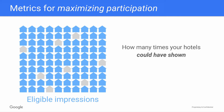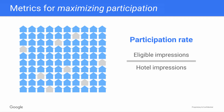Next is eligible impressions — this is the number of times your hotel ads could have shown; in other words, how many impressions you were actually eligible for. This brings us to participation rate, which is the impressions you were eligible for divided by the total opportunity out there for your hotels to show. This metric helps you understand your total opportunity and how much of it you're actually eligible for.